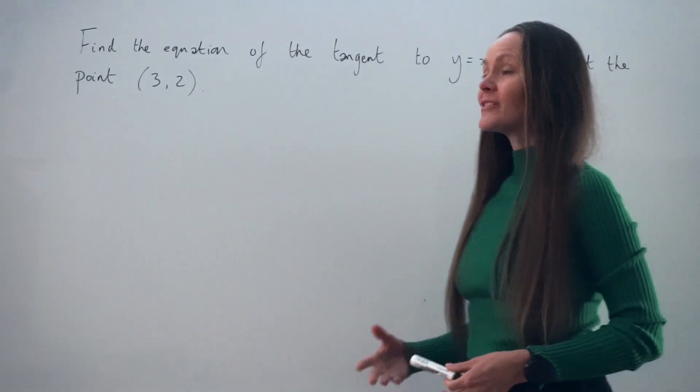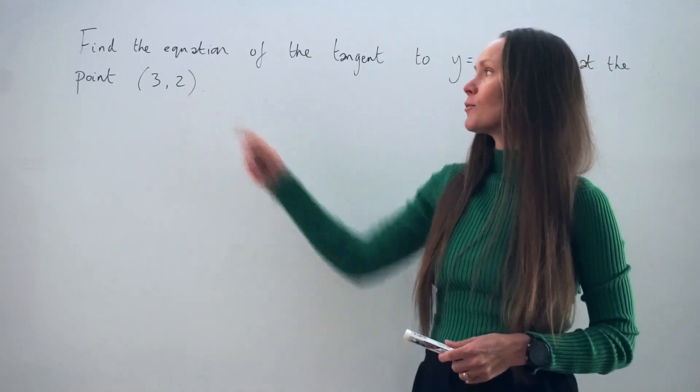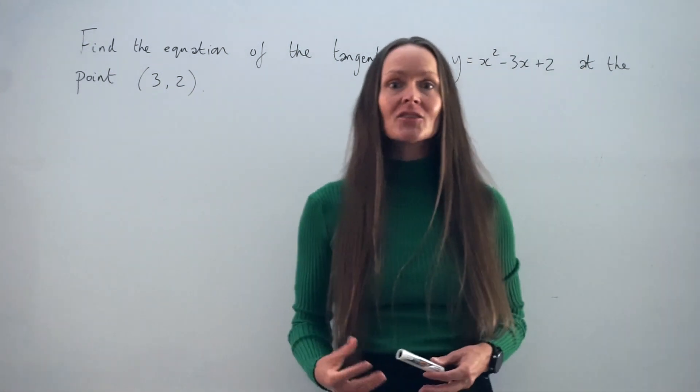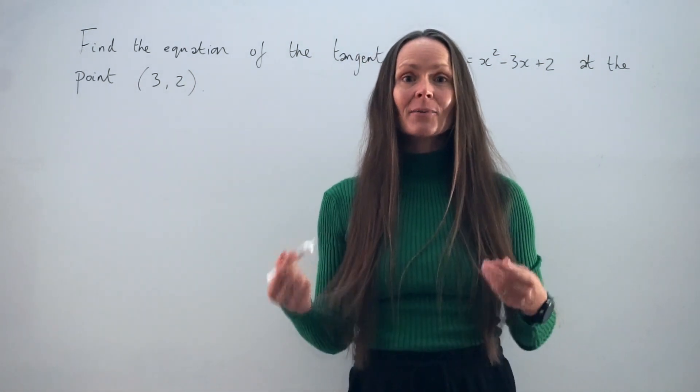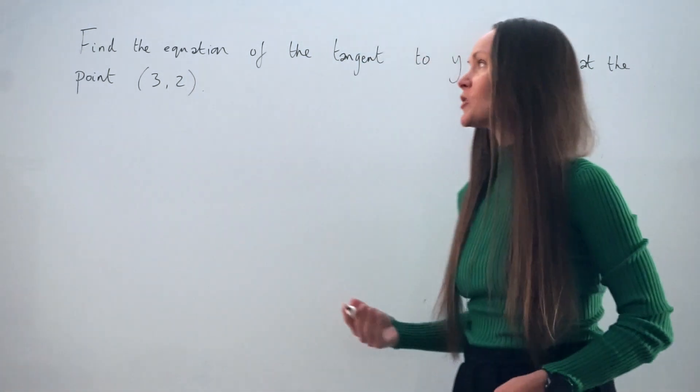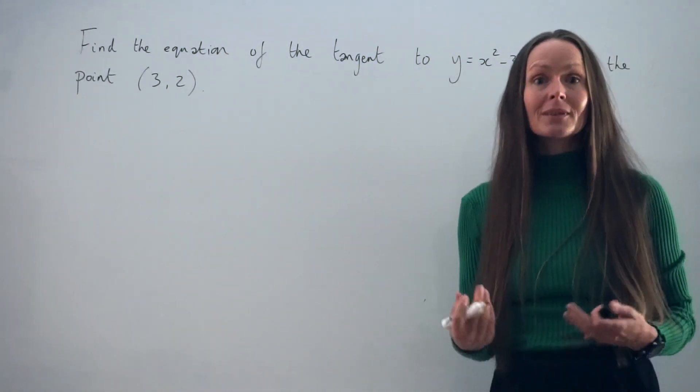Now, in this question, the tangent is a straight line that touches the curve at this point here, 3, 2. And remember, a tangent always has the same gradient as the curve at that point. So the first thing we need to do is work out an expression for the gradient of the curve. And to do that, we have to differentiate.